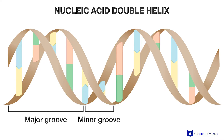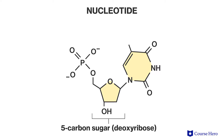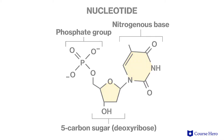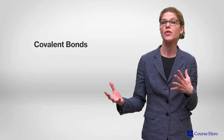DNA is a nucleic acid and is composed of a long chain of nucleotides. Each nucleotide consists of three parts: a five-carbon sugar called deoxyribose, a phosphate group, and a nitrogenous base. Neighboring nucleotides are attached to each other by covalent bonds between the sugar of one nucleotide and the phosphate of the next, resulting in a sugar-phosphate backbone.